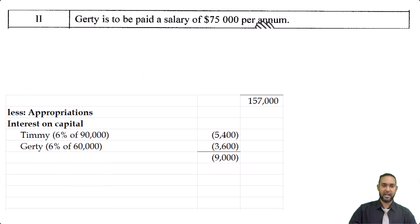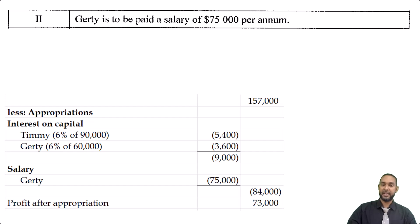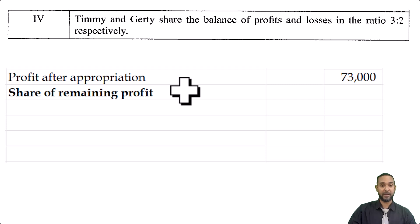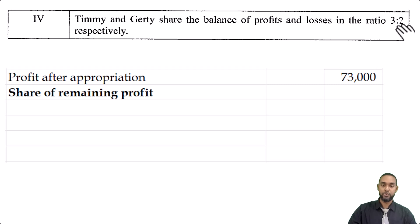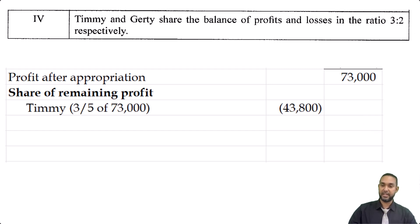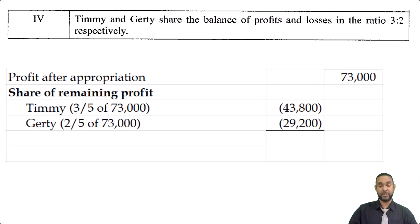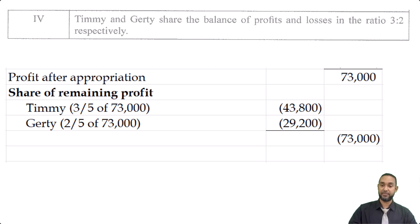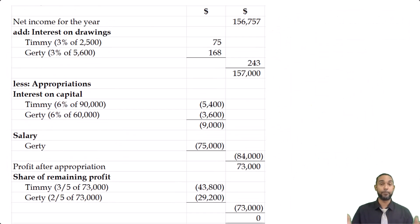Only Goethe gets a salary of $75,000 per annum. We add that here and get $84,000 as the total appropriation, which is then subtracted from $157,000. That gives us the profit after appropriation, which we then share between the partners. Item 4 told us they share the balance in the ratio of 3 to 2. We add 3 and 2 to get 5, and put each number over that 5 — so it's a three-fifths, two-fifths split to Timmy and Goethe respectively. Three-fifths of $73,000 gives $43,800; two-fifths gives $29,200. Adding those back gives us $73,000, meaning we've appropriated all the profits.